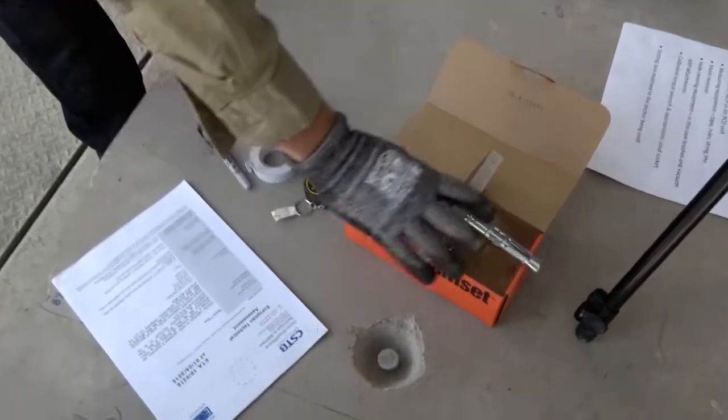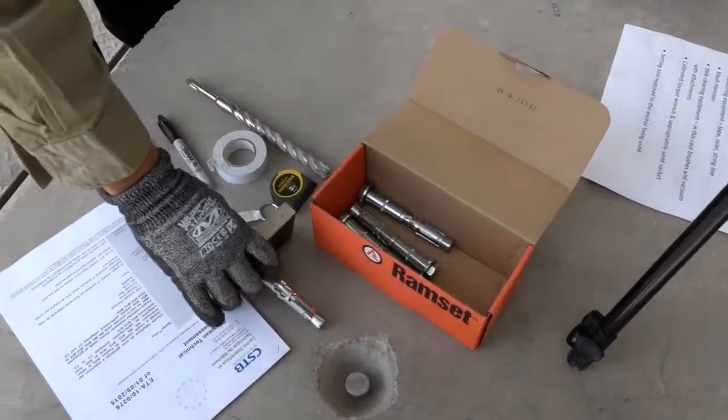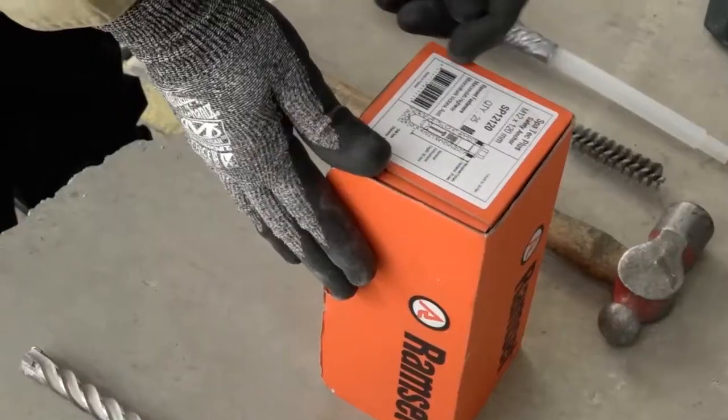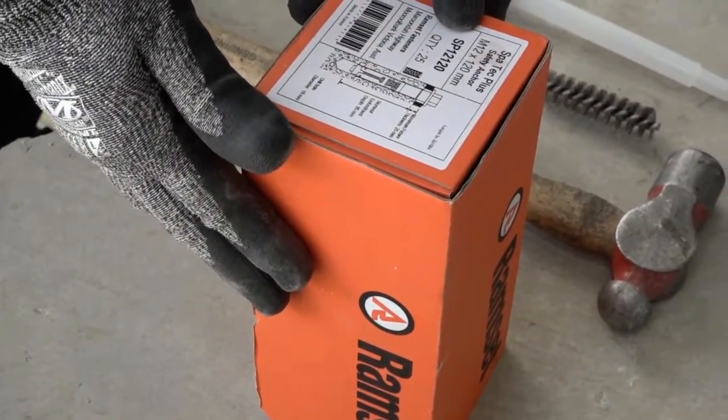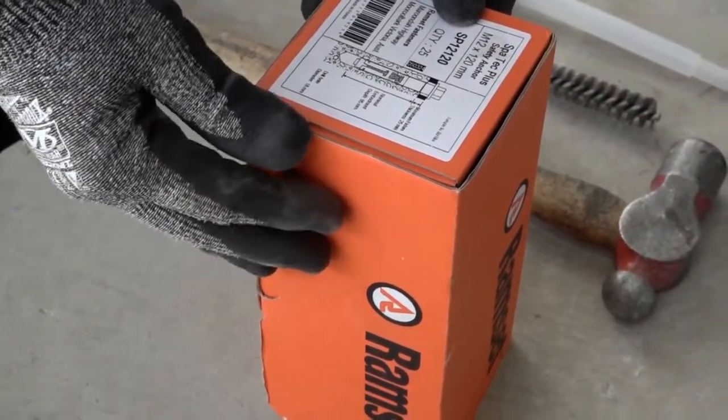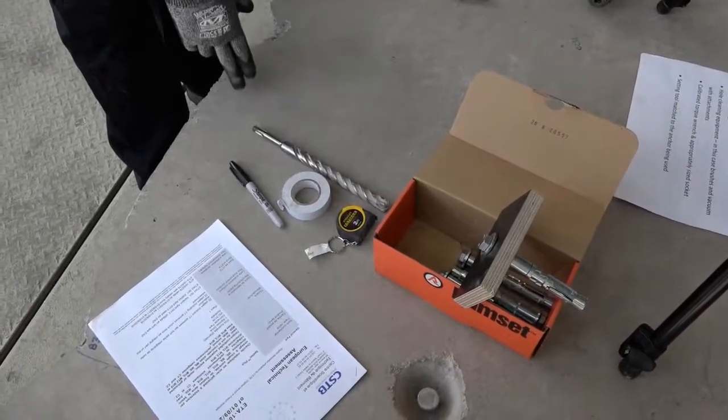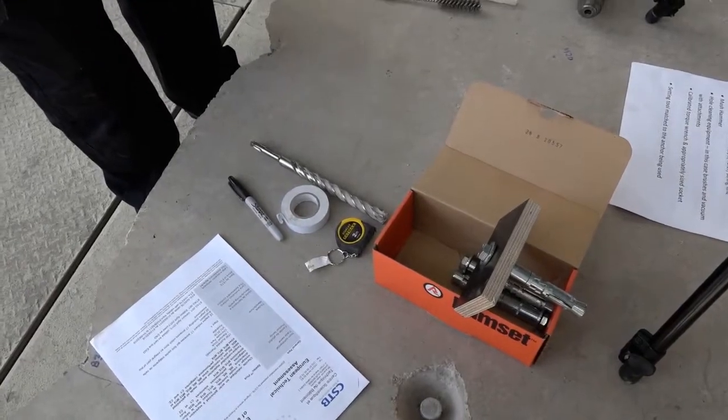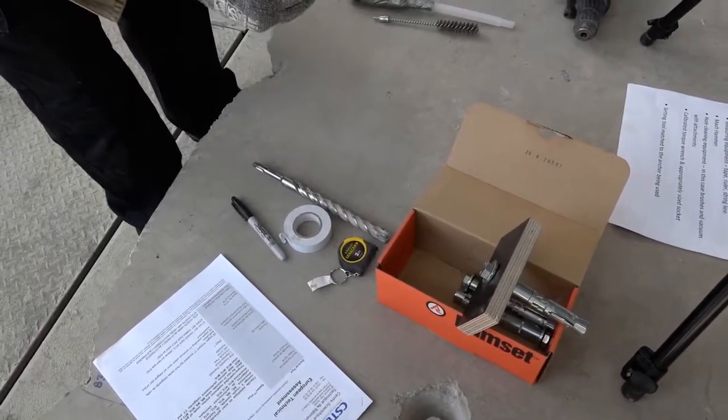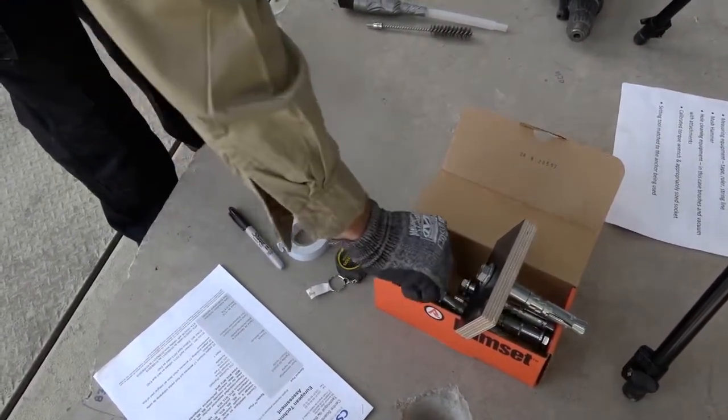The correct anchors as per the specification. So in this case, let's check the part number on the product. Confirm that it is the correct product for the project. Please note also that anchors are available not only in different diameters, but also different lengths per diameter. So it is important to get the correct length product.